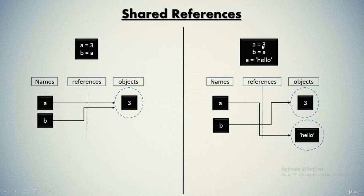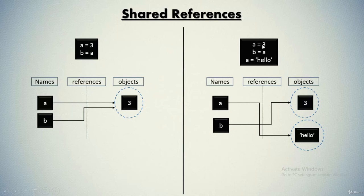We have assigned object 3 to variable 'a', then used variable 'a' to assign value to variable 'b', which means 'a' is referencing to 3, so 'b' and 'a' are referencing the same object and the same chunk of memory. Then we assign the string value 'hello' to 'a'. Now 'a' was referencing to value 3 — that value 3 will be garbage collected and immediately replaced by the string 'hello', while 'b' will continue to contain 3 because it was referencing the memory location which was containing 3.